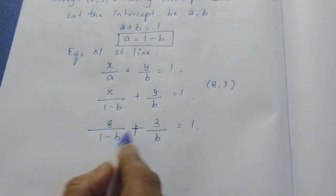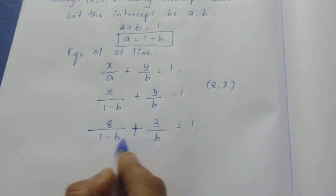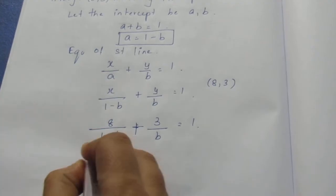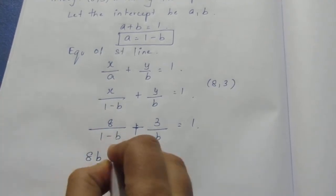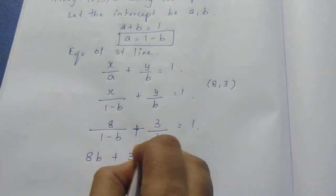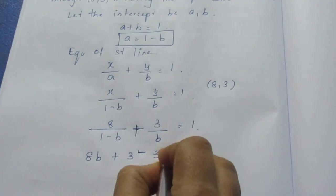Now, taking LCM and cross multiplying the denominators, we expand the numerator. After multiplying through, we get 8b plus 3 minus 3b on the numerator side.